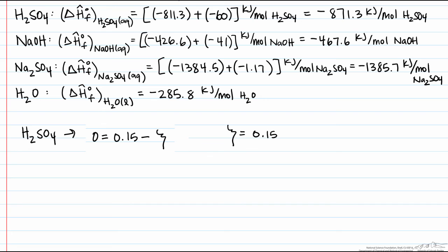Finally we put this whole thing together. Our Q equals our extent of reaction multiplied by the sum of our enthalpies of our products minus the sum of our enthalpies of our reactants. What's important is we have to multiply each of these heats of formation by its stoichiometric coefficient.